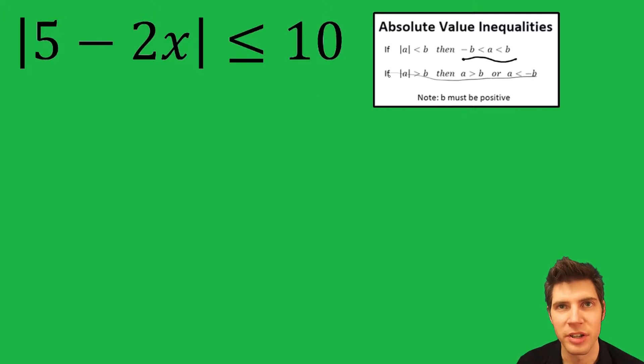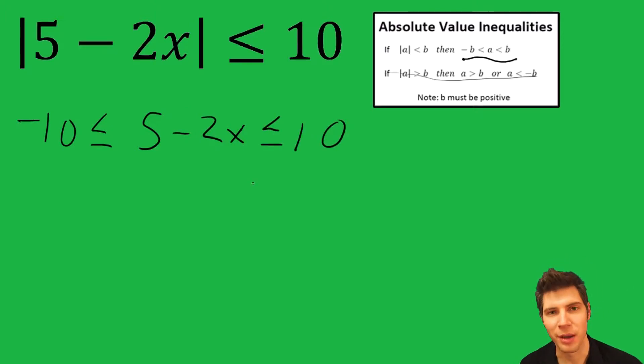And then we'll ignore this because that's not what's happening right now. So we're going to say the negative, the B, so it's going to be negative 10 is less than or equal to, and it's going to be 5 minus 2X. Notice how I did not put the absolute value here. That's because by doing this step, we're getting rid of the absolute value.